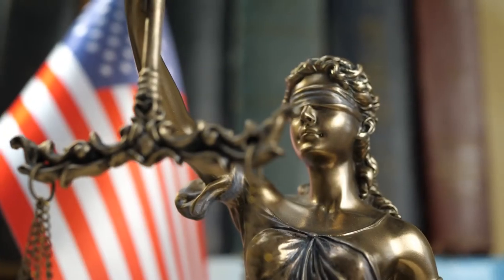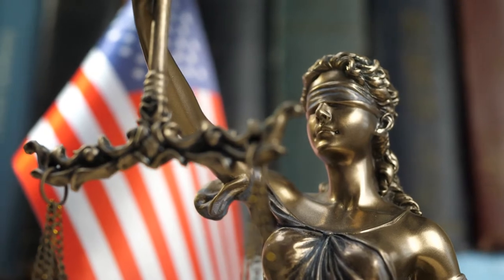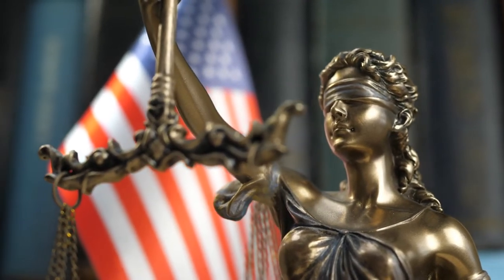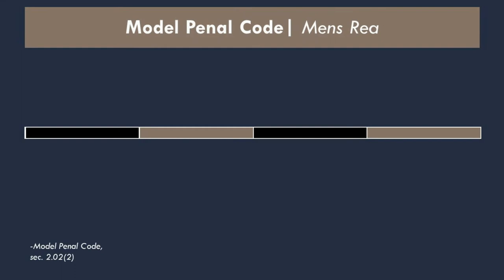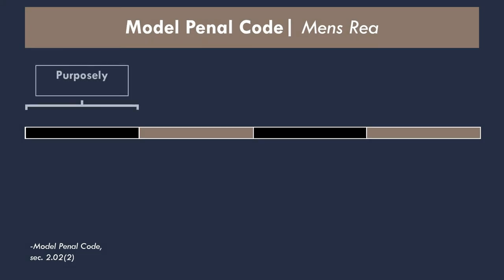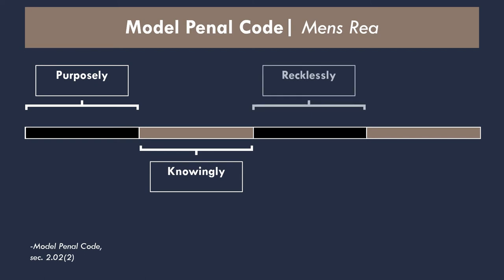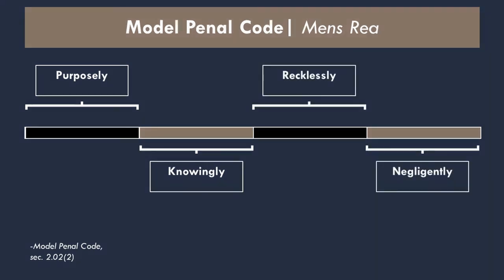Section 2.02, subsection 1 of the Model Penal Code describes the minimum requirements of culpability. Its mens rea categorizations fall along a spectrum. The four mental states described are purposefully, knowingly, recklessly, and negligently. As an easy mnemonic, just remember P-K-R-N. Let's examine each of these mental states in turn.